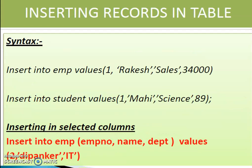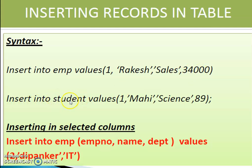Example: We have to insert values into the emp table and student table. INSERT INTO emp VALUES (1, 'Rakesh', 'Sales', 34000) — 1 is the emp number, then name, then which department: sales department, then their salary. Then INSERT INTO student VALUES (1, 'Mahi', 'Science', 89).